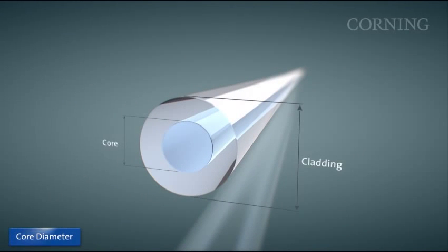Core diameter is a fundamental design parameter of multi-mode optical fiber. The larger the core, the more modes of light can propagate through the fiber. Multi-mode fiber has a much larger core size than single-mode fiber.